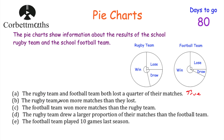Next: the rugby team won more matches than they lost. Looking at the rugby team pie chart, they won over half of their matches and they lost a quarter. So they did win more than they lost — that's true as well. If you've got these two right so far, well done.